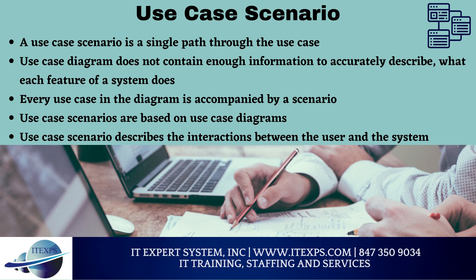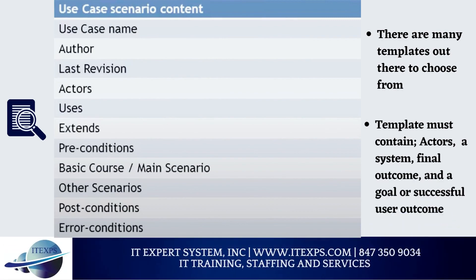Why do we need a use case scenario? You might have noticed that the use case diagram we just created does not contain enough information to accurately describe what each feature of a system does. Every use case in the diagram is accompanied by a scenario. Use case scenarios are based on use case diagrams and describe the interactions between the user and the system. Before creating our use case scenario, it's important to understand the template it follows. There's no specific template, but every template contains the main factors needed: actors or the user, a system or process required to reach the final outcome, and a goal, which is the successful user outcome.